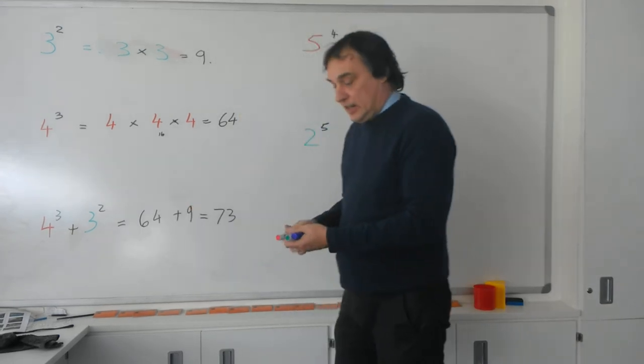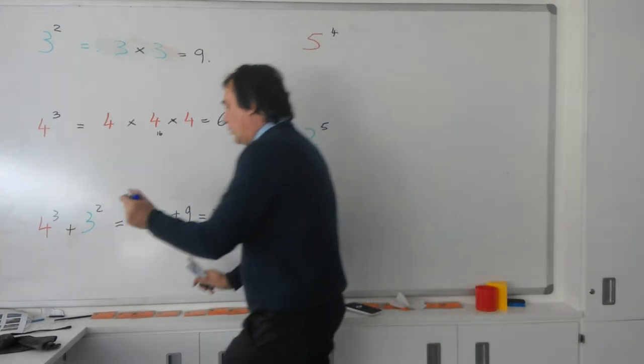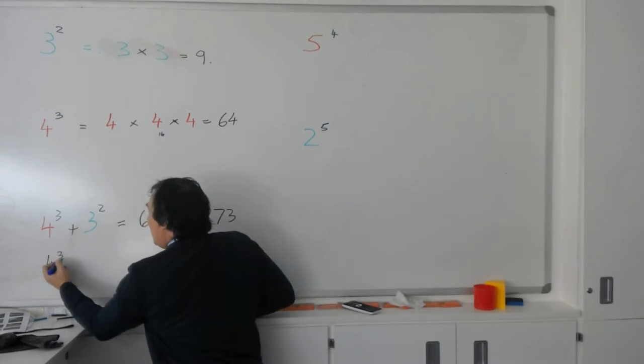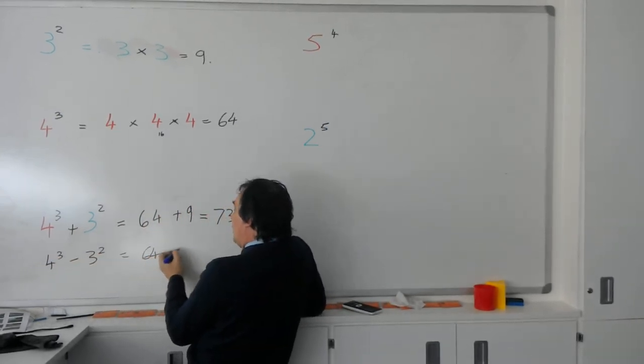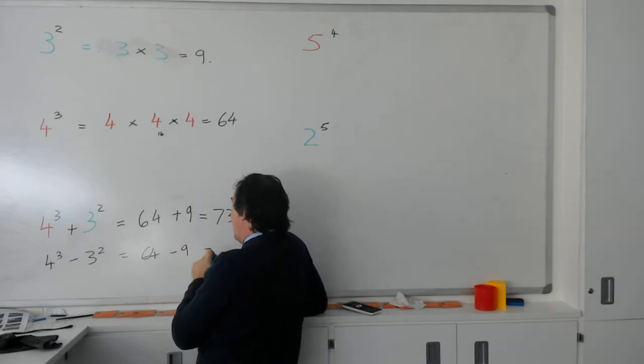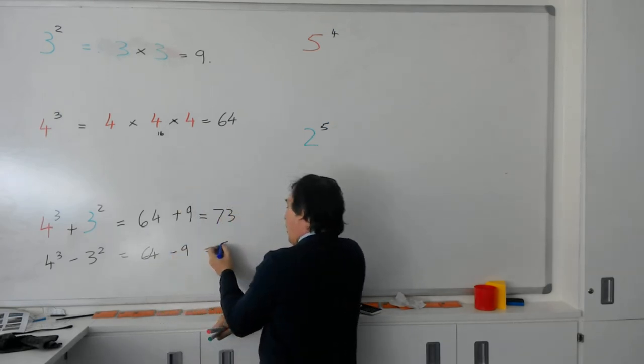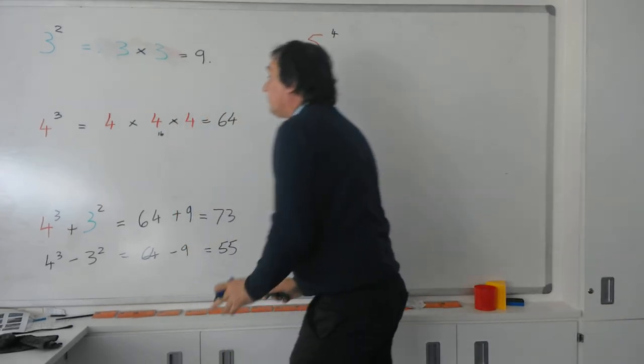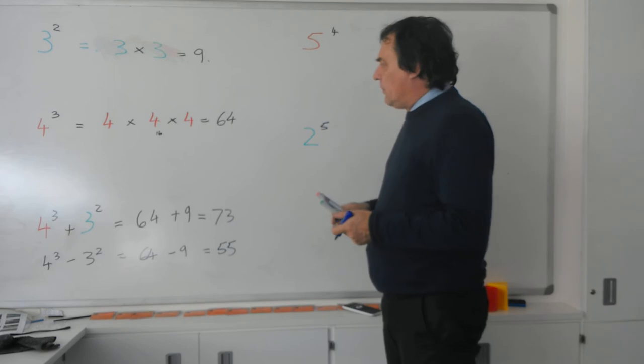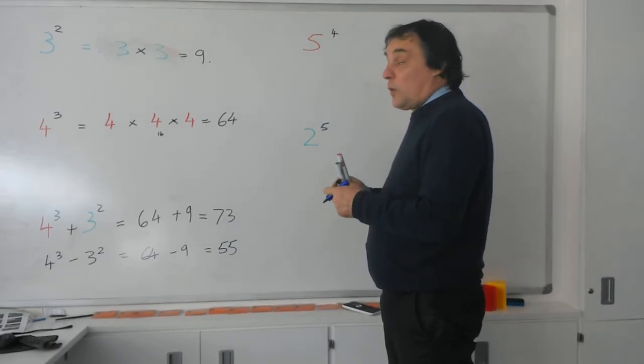In the same way, I could just do it quickly, if we had 4 cubed, take away 3 squared, I'd simply do 64, take away 9, got the answers up there, and then that will give me an answer then of 55. So, either way, those works. So, that's how you manipulate squares and cubes.